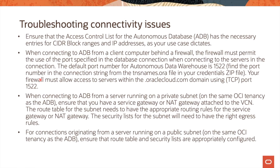Let us now look at troubleshooting connectivity issues. You need to ensure that the access control list for autonomous database has the necessary entries for CIDR block ranges and IP addresses as your use case dictates. When connecting to autonomous database from a client computer behind a firewall, the firewall must permit use of the port specified in the database connection when connecting to the servers. The default port number for autonomous data warehouse is 1522, and your firewall must allow access to servers within the .oraclecloud.com domain using port 1522.